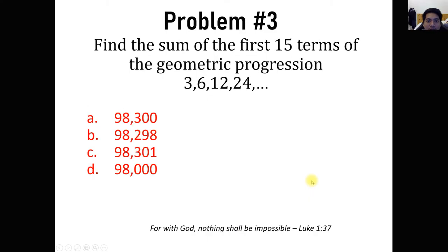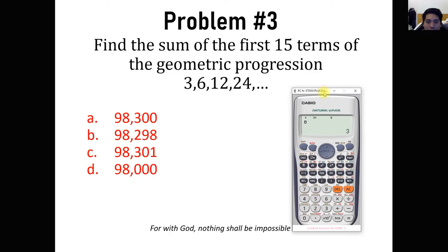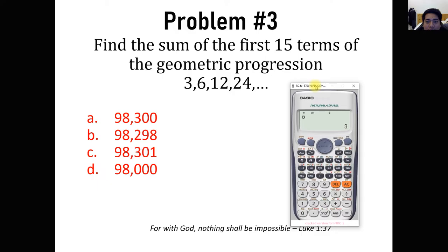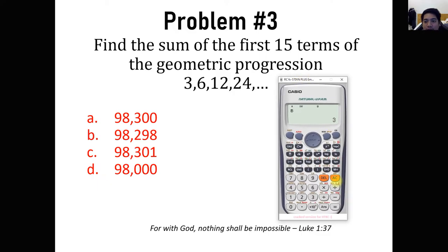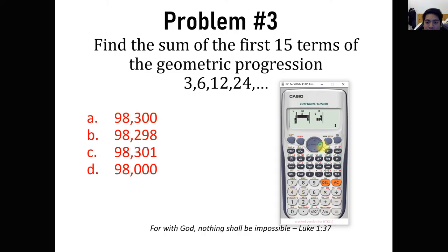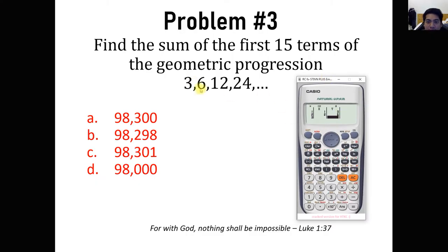For problem three: find the sum of the first 15 terms of the geometric progression 3, 6, 12, 24, up to the 15th term. We go to STAT and enter the data again. The first term is 3 and the second term is 6. There's no need to enter all terms — just the first two is enough. Then click AC.